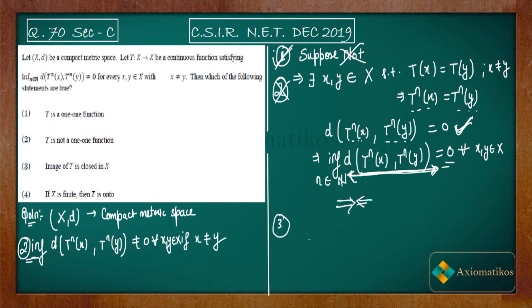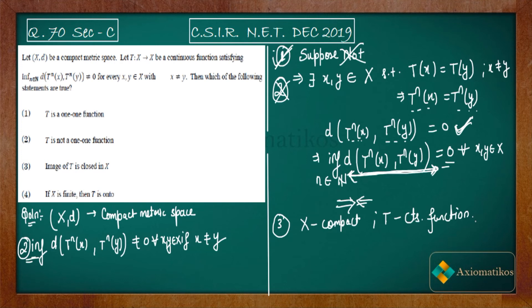For Option 3, it says the image of T is closed in X. We know X is compact and T is a continuous function. By the theorem that a continuous function maps compact sets to compact sets, the image of X under T is compact. Since compact sets in a metric space are always closed, Option 3 is true.